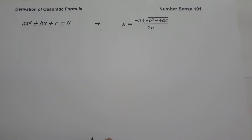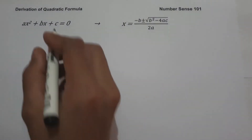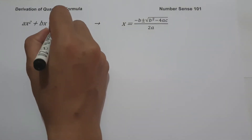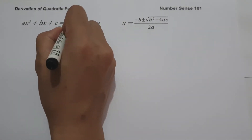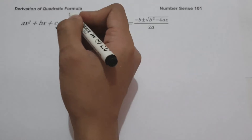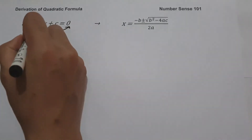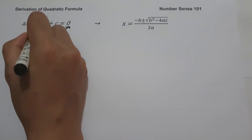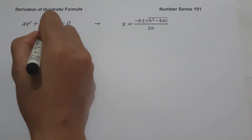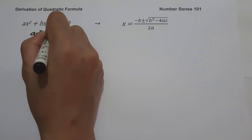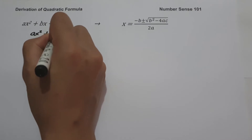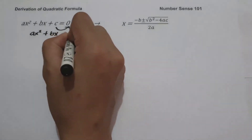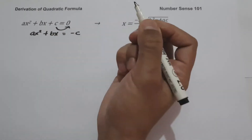The first thing we are going to do is move c to the other side of the equation. This gives us ax² + bx = −c.